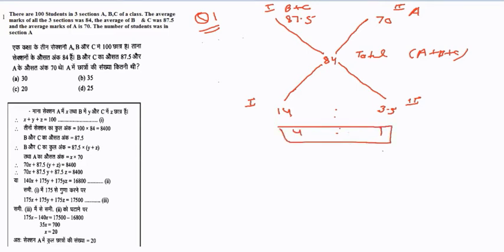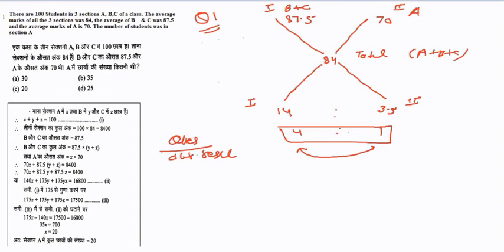Simplifying the ratio 3.5 to 14 gives us 1 to 4. So Section A has 1 part and Section B plus C has 4 parts, making the total 5 parts. According to the question, the total number of students is 100, while our result gives a total of 5.